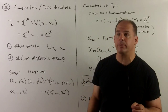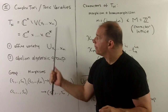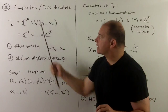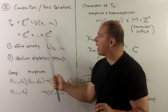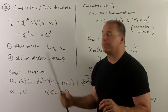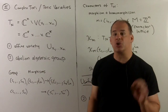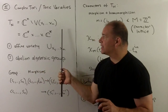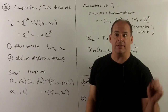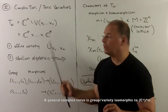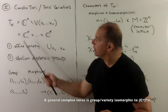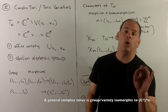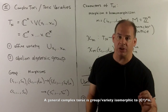Connecting this to the previous section, these complex tori — products of C-stars — are going to have the structure of an affine variety by identifying this as a principal open subset of C^n. Notationally, we'll use T_n; the capital N we'll hold on for now, so that's just notation for later.